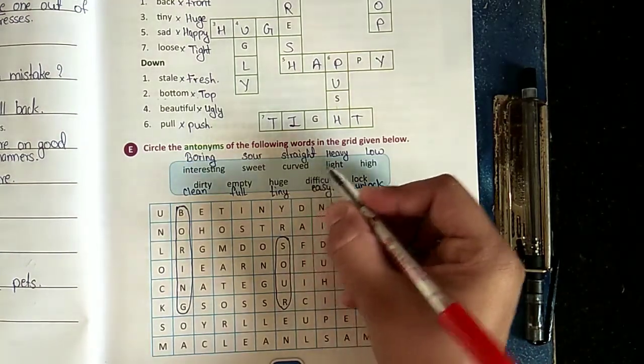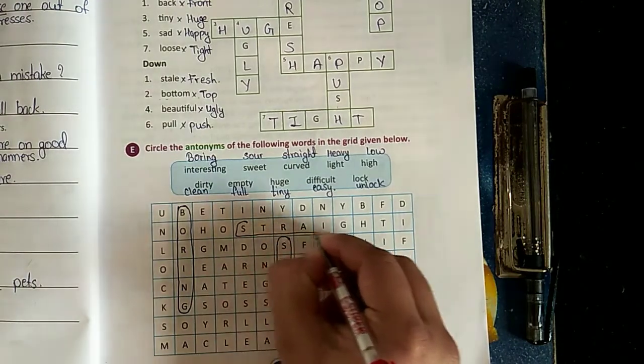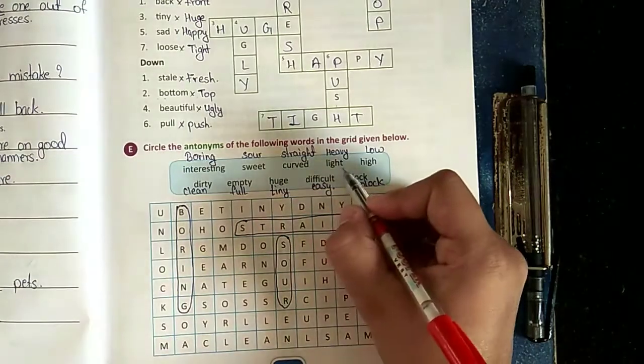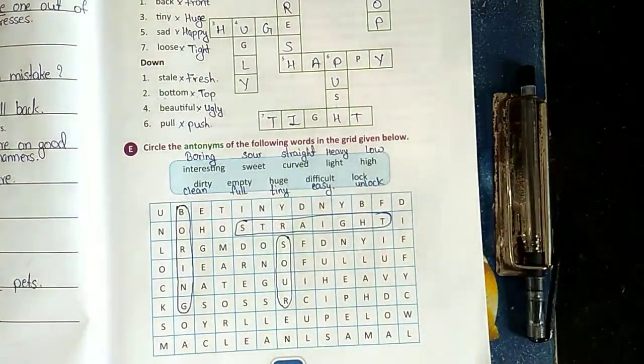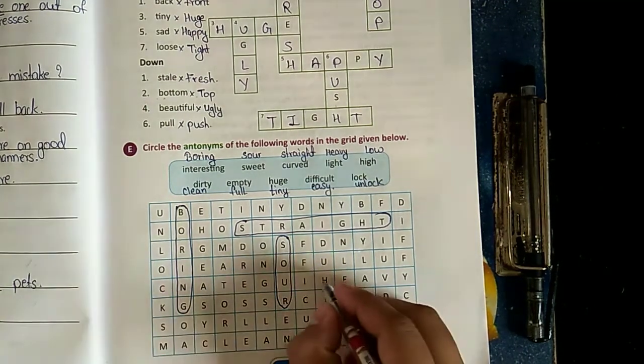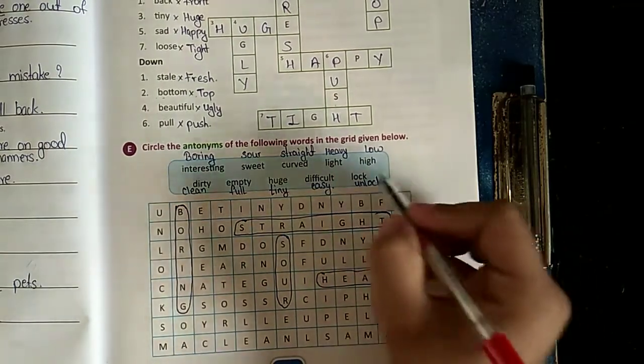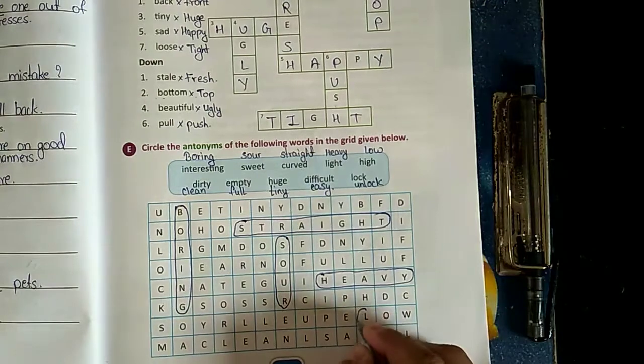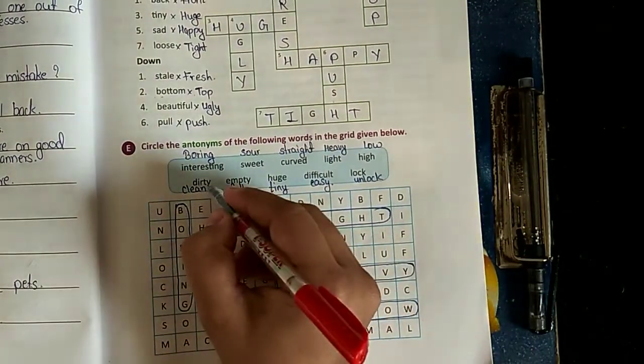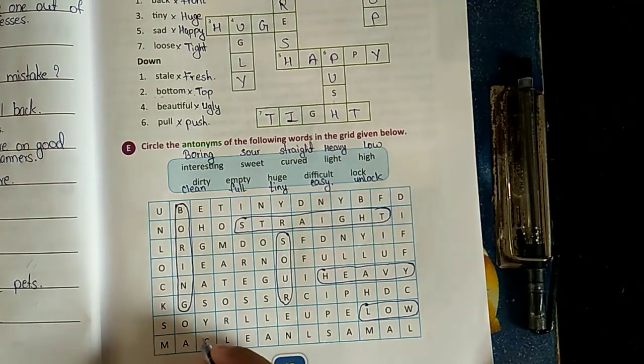Curved - what is the opposite of curved? It is straight: S-T-R-A-I-G-H-T. Light - what is the opposite of light? It is heavy. Opposite of high - it is low. Opposite of dirty - it is clean. Can you find anyone clean here? Yes, it is in the last line: clean.